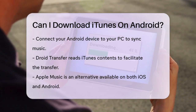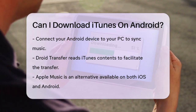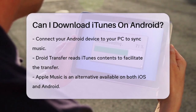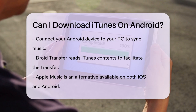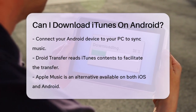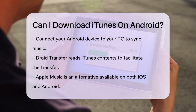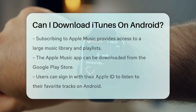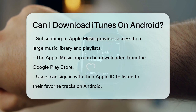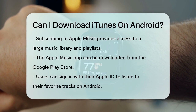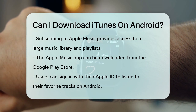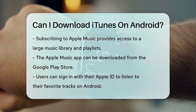This way, you can enjoy your iTunes music on your Android phone without needing to download iTunes itself. Another option is to subscribe to Apple Music, which is available on both iOS and Android devices. With Apple Music, you can access a vast library of songs, personalized playlists, and radio stations. You can download the Apple Music app from the Google Play Store, sign in with your Apple ID, and start listening to your favorite tracks.